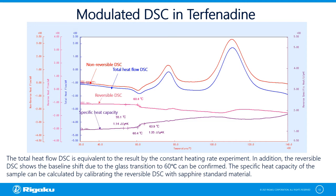When the reversible heat flow is confirmed, a slight baseline shift in the endothermic direction can be seen at 60°C, confirming the glass transition. In addition, in the non-reversing heat flow curve, an endothermic peak is observed at 60°C, and exothermic peaks can be seen at 70°C and 110°C, similar to the conventional DSC result. Through these, even if the glass transition cannot be confirmed in the conventional DSC result, the specific heat capacity component can be extracted using dynamic DSC to confirm the glass transition reaction and glass transition temperature.